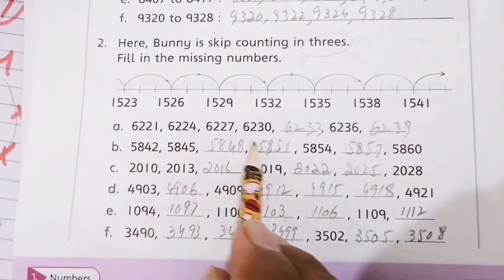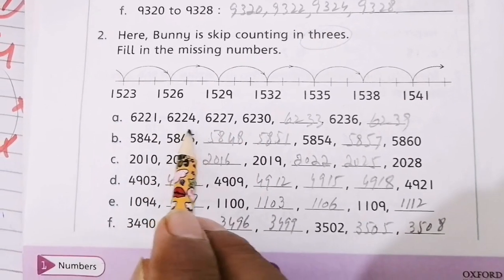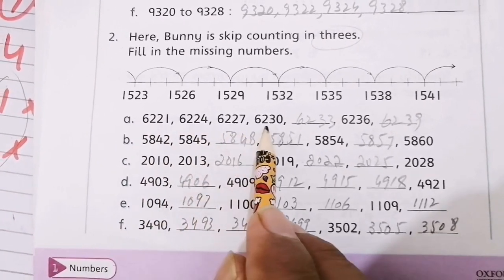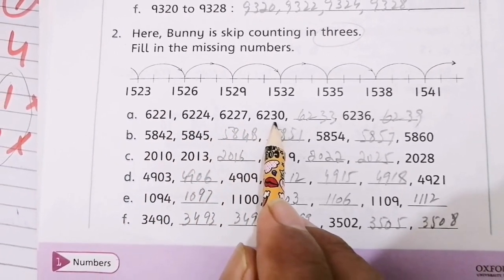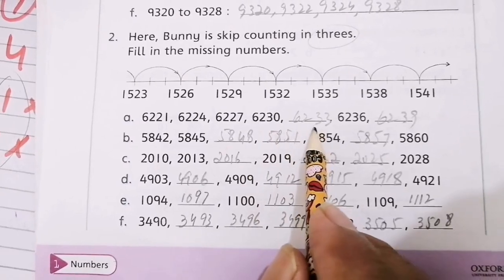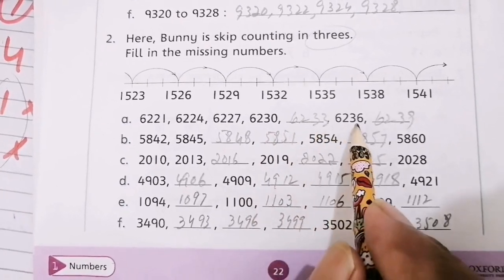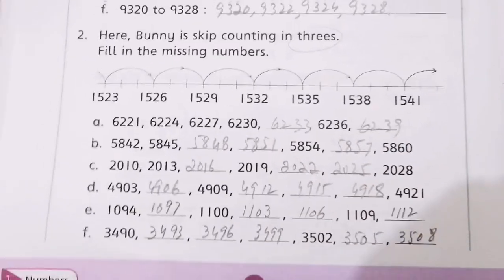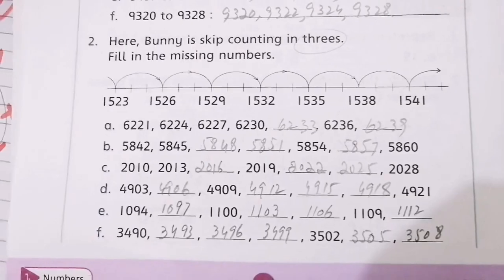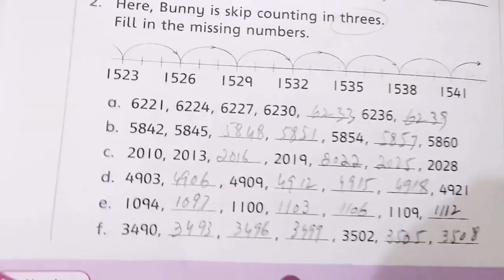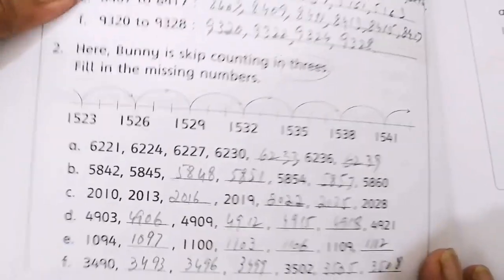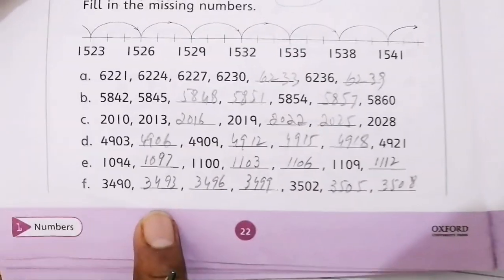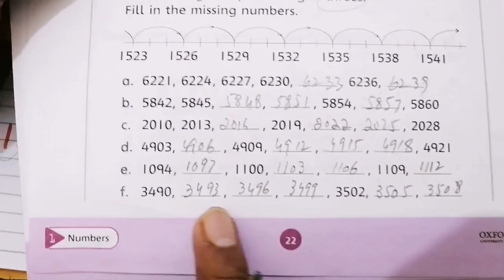This is skip counting in 3s. Look at that: 6230, 6233, 6236, 6239 — counting in 3s. You can solve them and practice yourself.